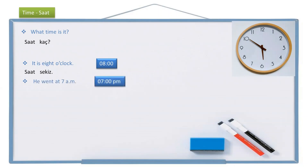The sentence is: he went at 7 a.m. I understand that he went at 7 in the morning. So I'm going to write it like this in Turkish: he — o, went — gitti, at 7 — yedide, instead of a.m. I write morning — sabah. He went at 7 a.m.: o sabah yedide gitti.